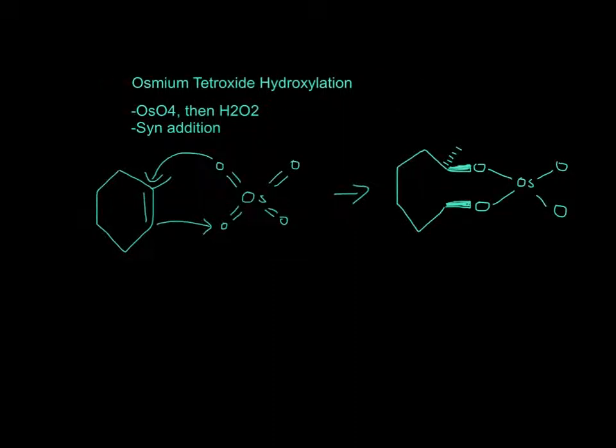So for osmium tetroxide hydroxylation, you have OsO4 and then H2O2, and it will also be a syn addition.